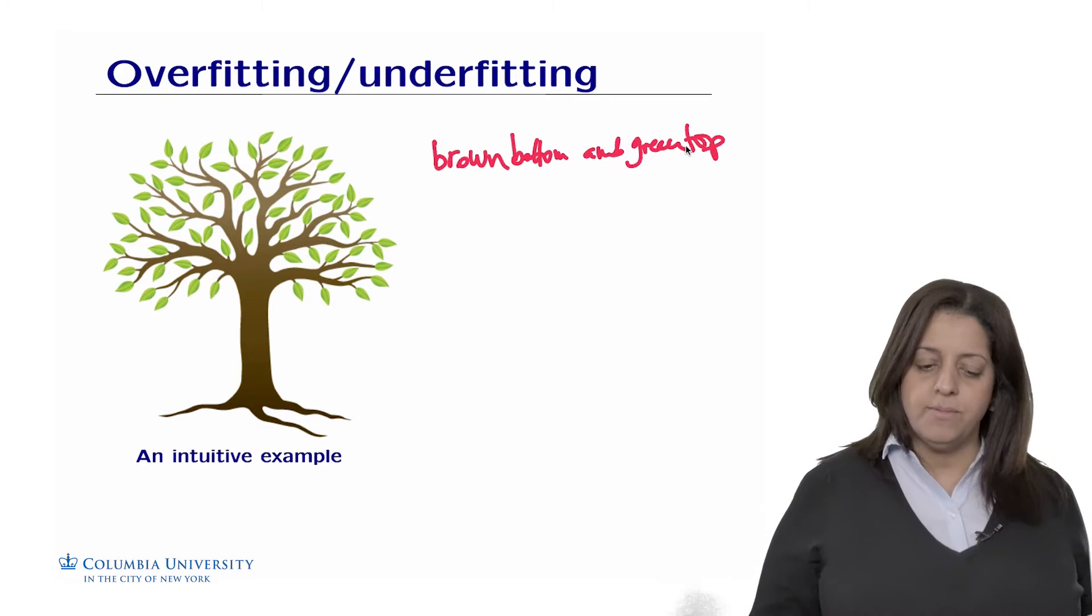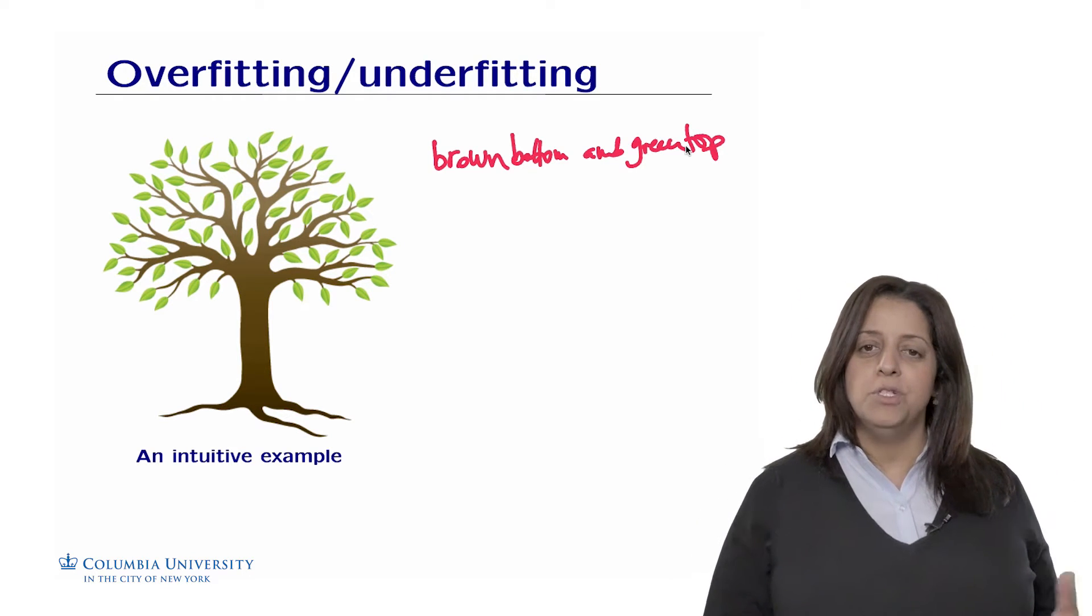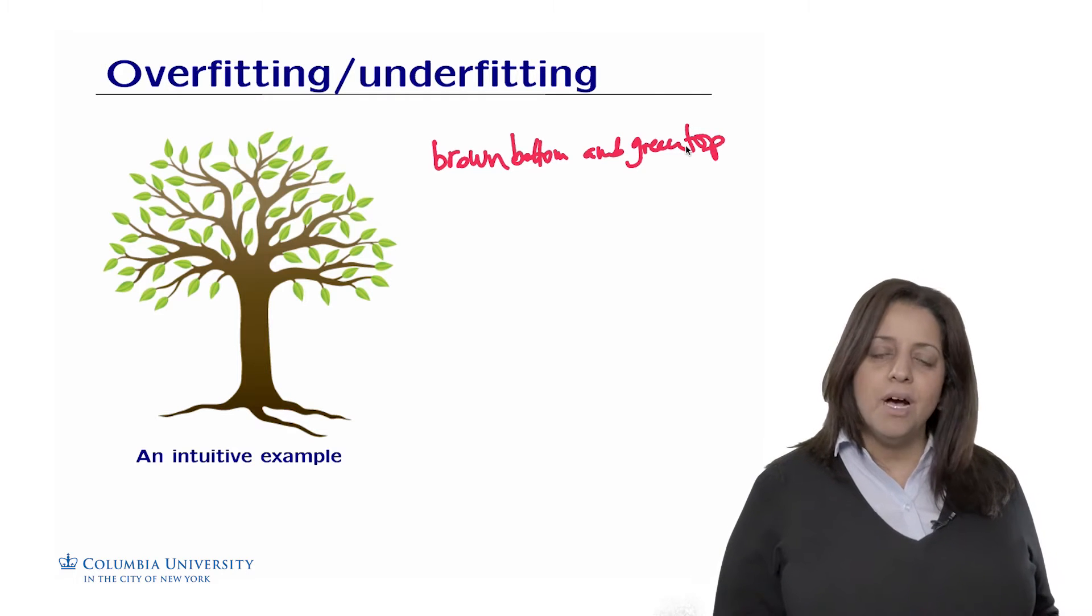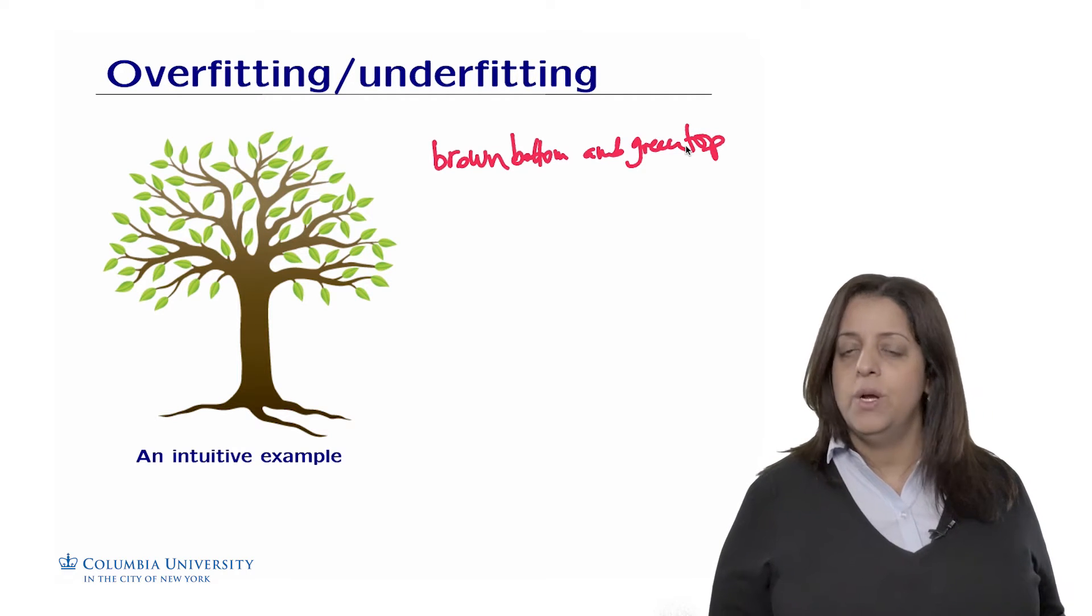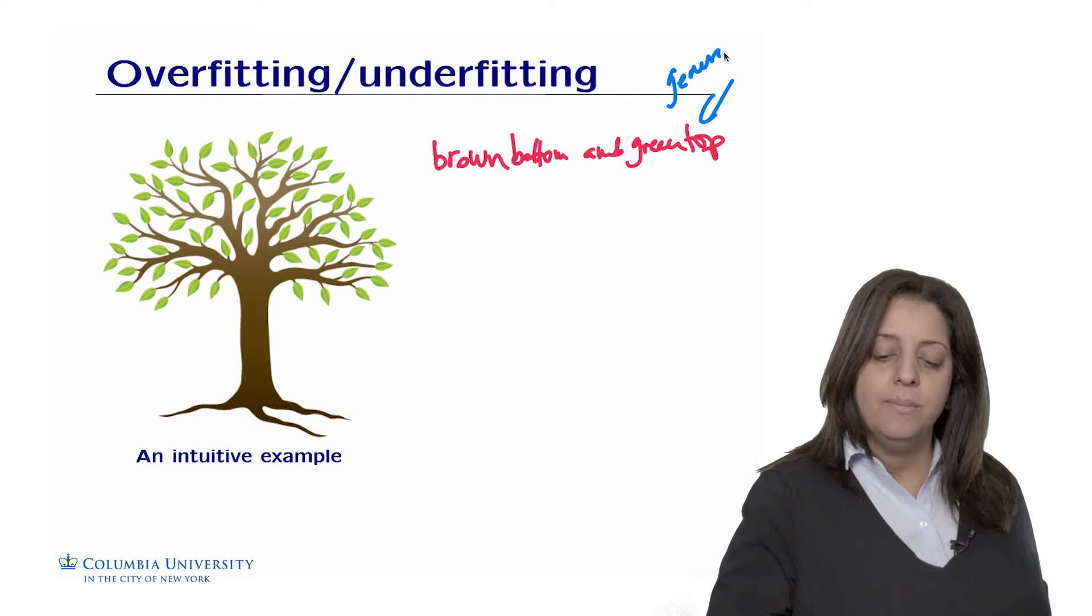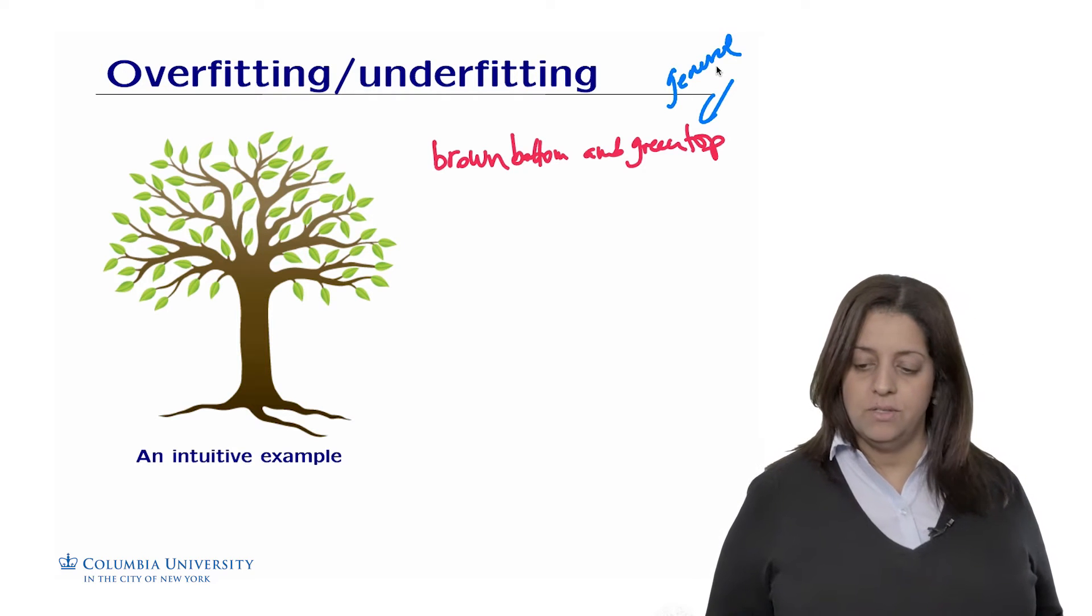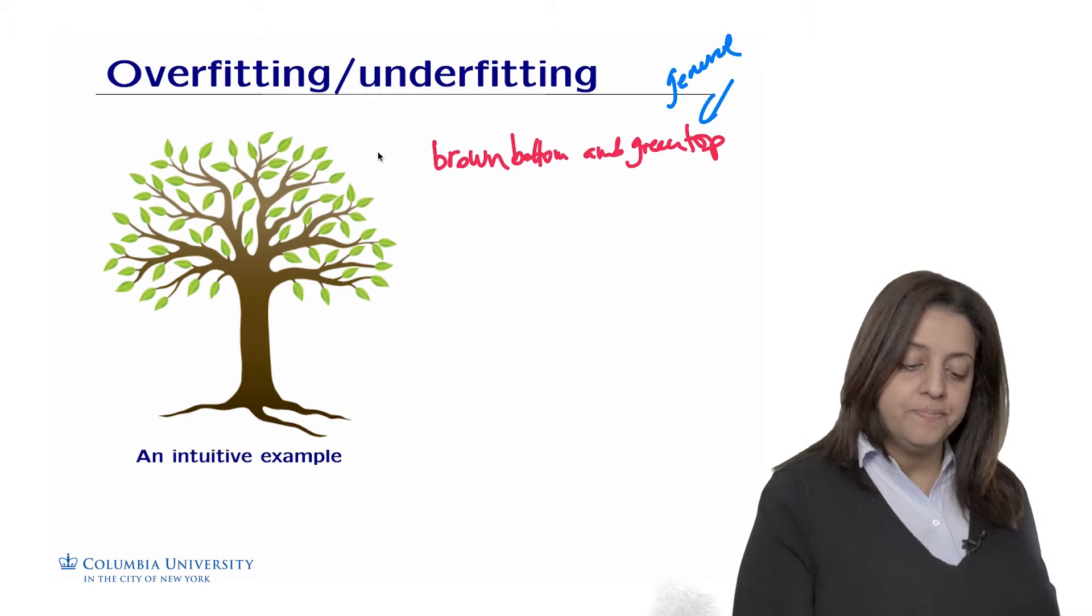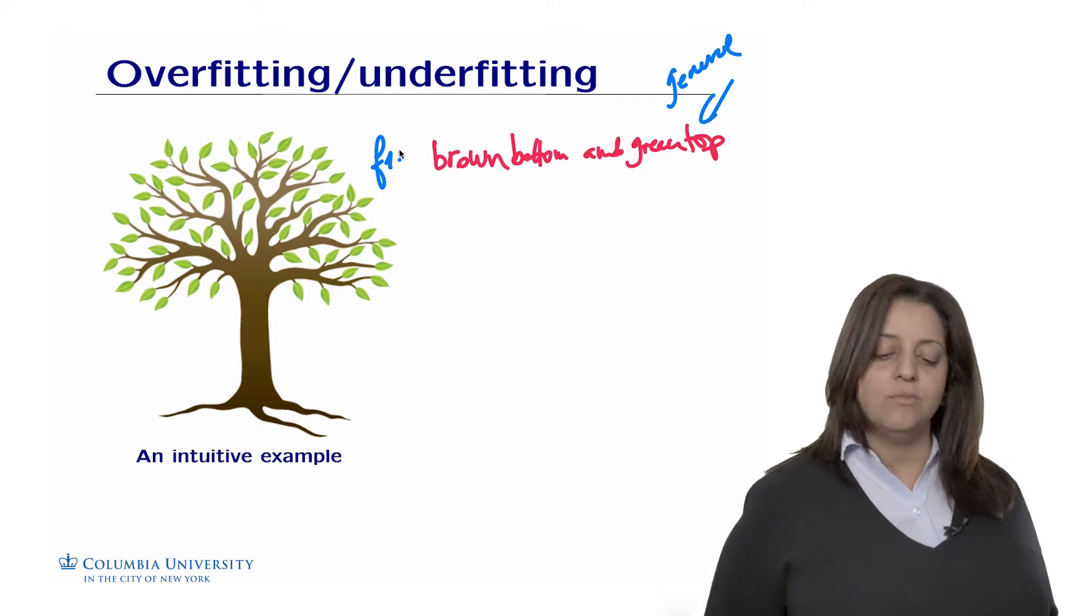So this describes a tree. But however, if the dataset that we have also has bushes and other things, some other things can be mistaken as trees where they are not. So this is a very general concept, a very general description of a tree. So this is our first function, F1, that describes what's a tree.